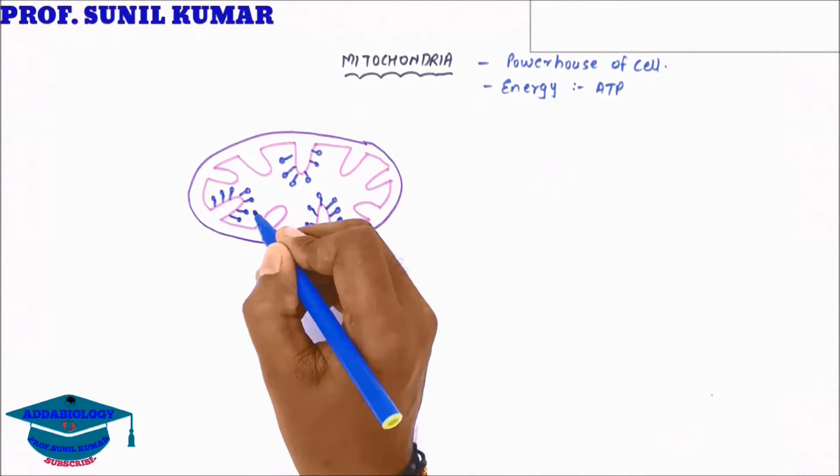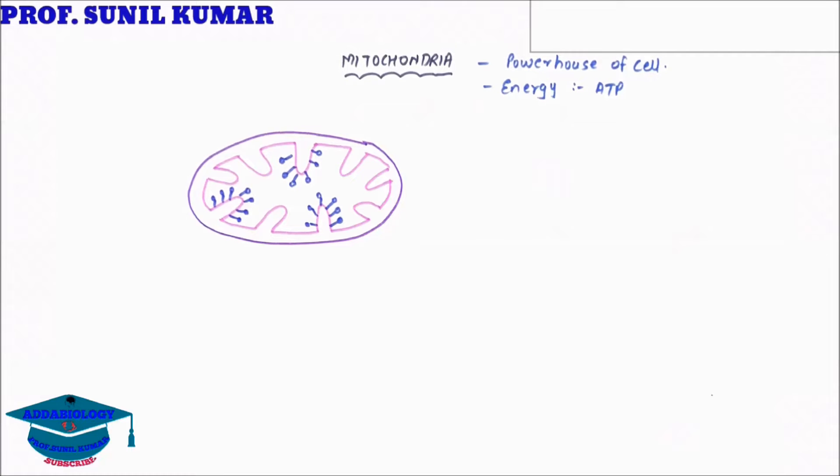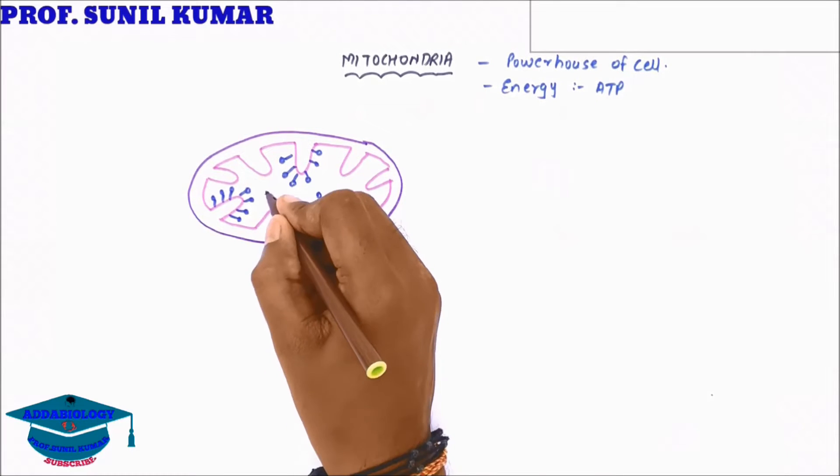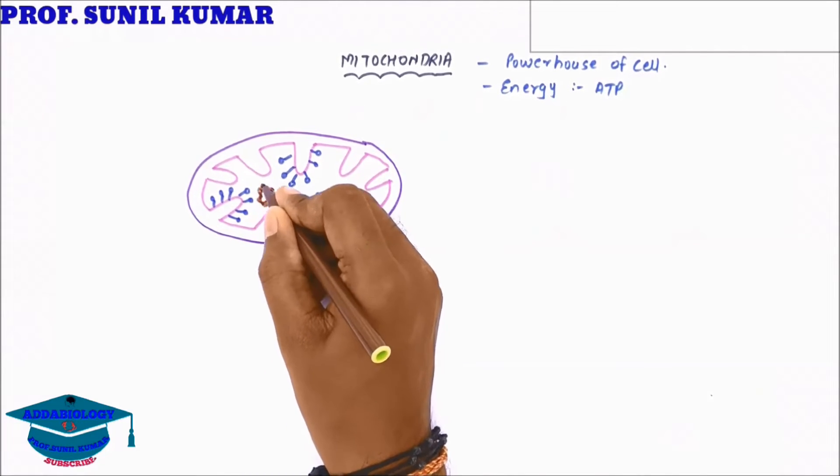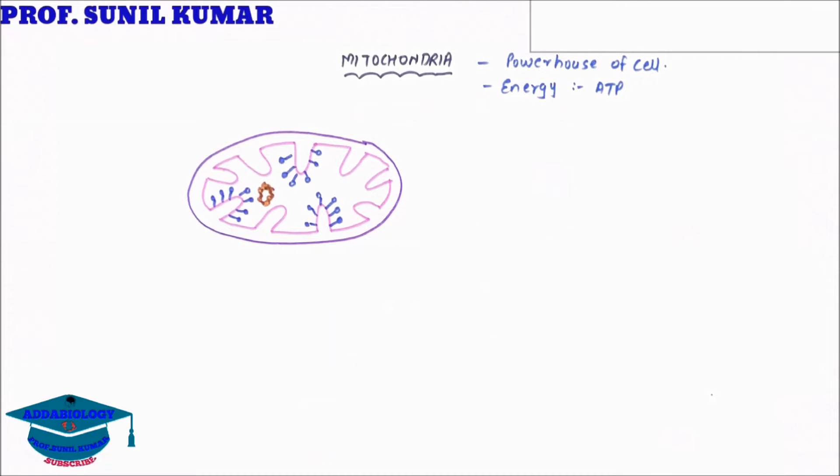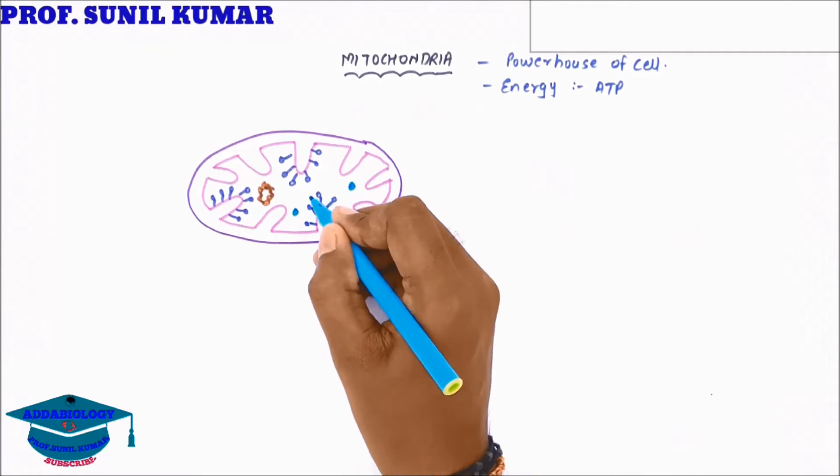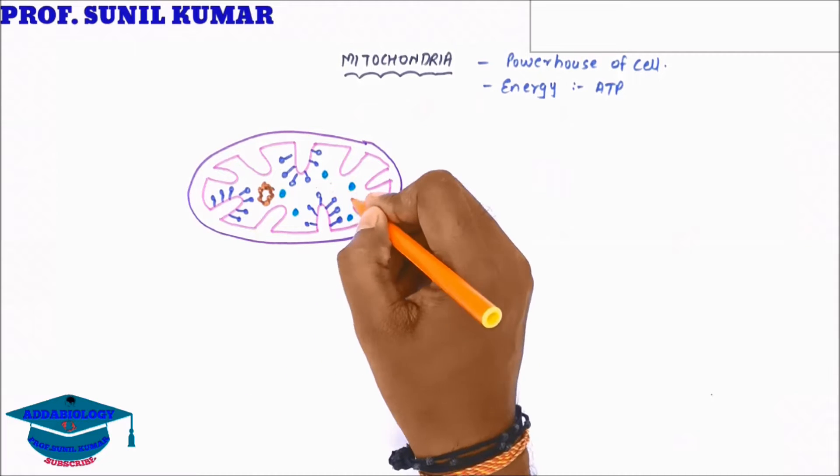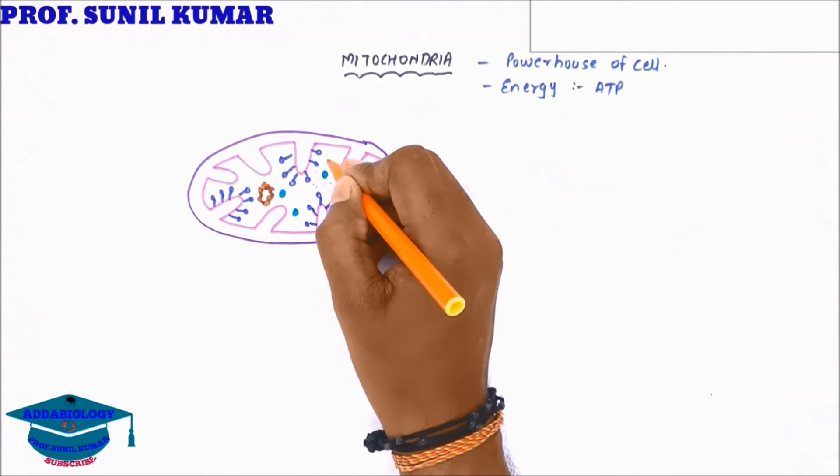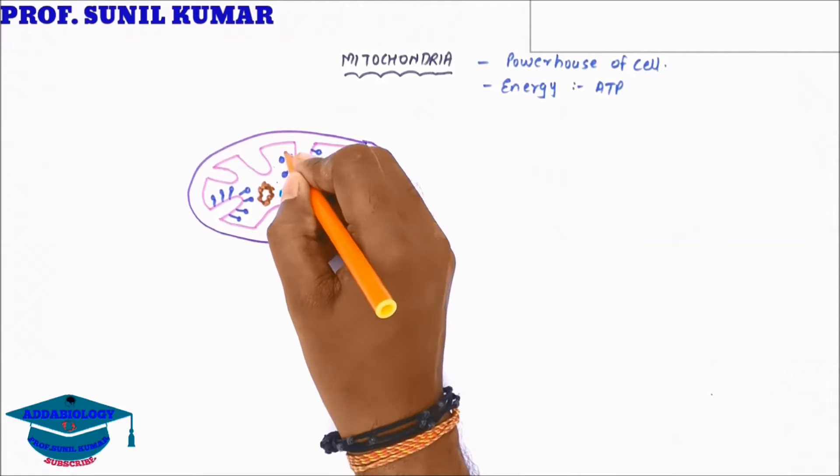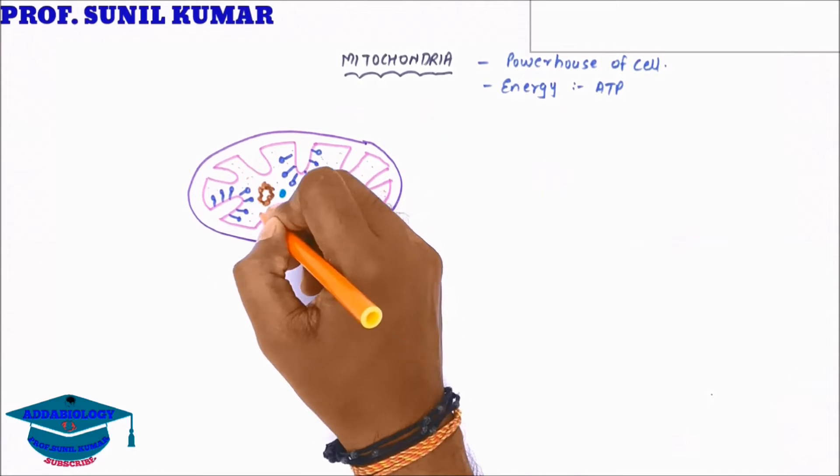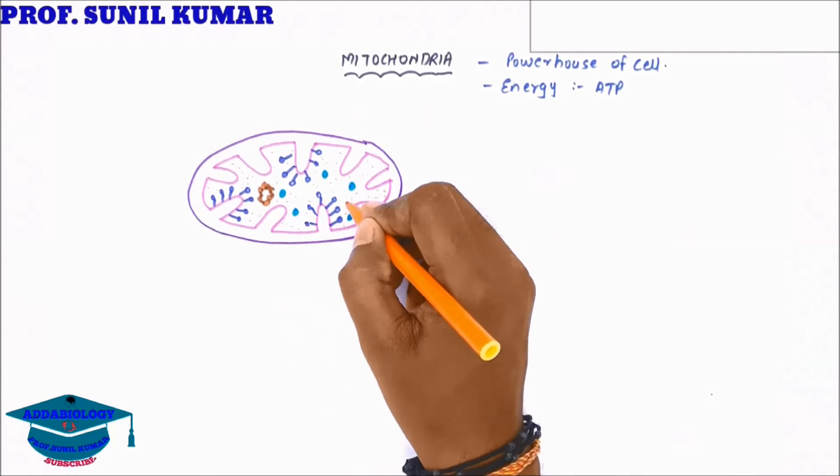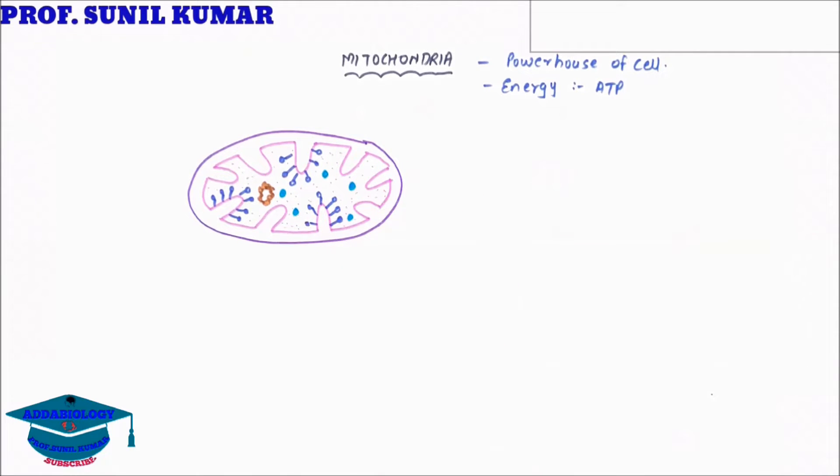This structure resembles an Alpenliebe lollipop. Inside the mitochondria, there is circular double-stranded DNA and there are ribosomes. These all become the structure of mitochondria, but here the Cristae is not visible clearly. So we are going to make one Cristae out.